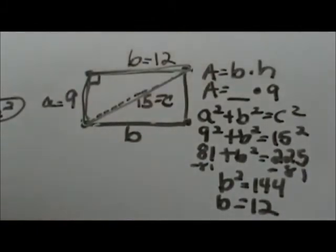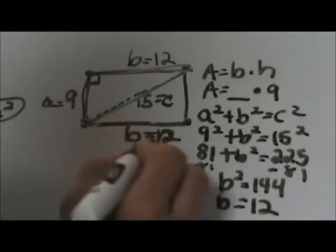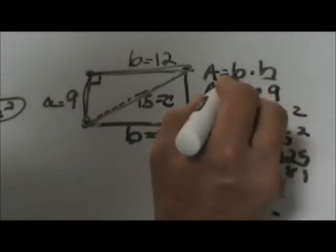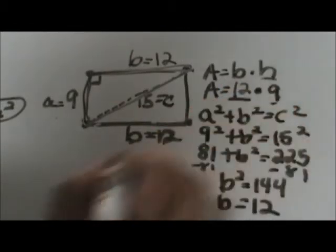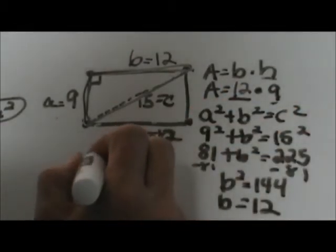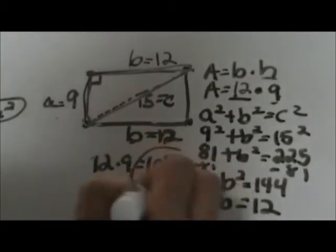Let's go back up here and label both sides 12. Now we can plug in to our area formula. We now have our height of 9 and we now have our base of 12. So 12 times 9 is 108 square units.